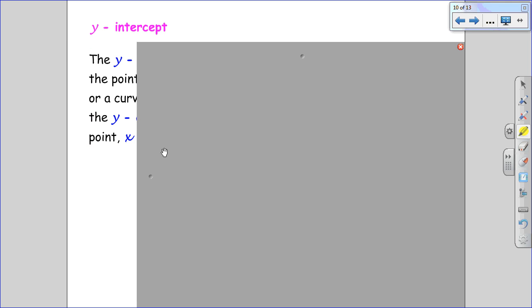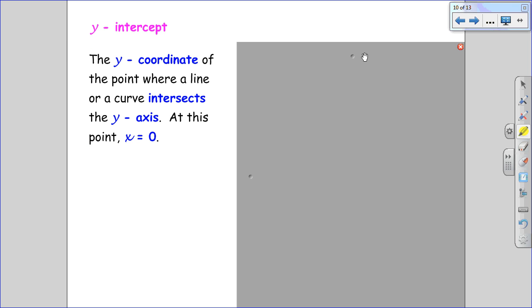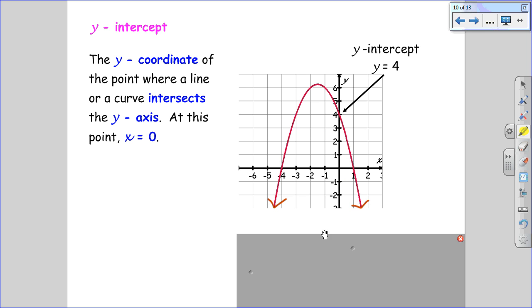The y-intercepts, similarly, are instead of crossing the x-axis as x-intercepts did, it's where we're crossing the y-axis. So we'll see on this graph we cross the y-axis once at y equals 4.